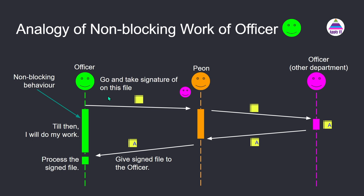The peon is giving a promise to the officer that he'll bring the signature on the file. When the first officer hands over the file, it is not known how much time the peon will take — that's why it's a promise, because the signing event will happen in the future. But the advantage is that while the peon is getting the file signed, the first officer's time — shown with green color — is not getting wasted. This is called a non-blocking call or asynchronous call.